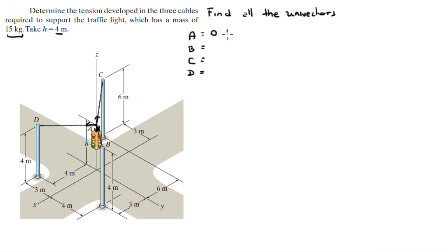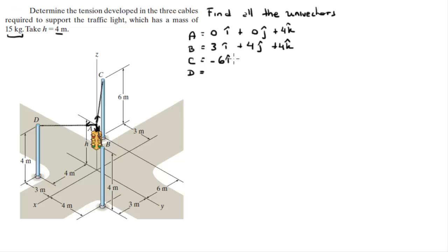So A sits at 0i + 0j + 4k. B sits at 3i + 4j + 4k. C sits at -6i - 3j + 6k. And D sits at 4i - 3j + 4k.